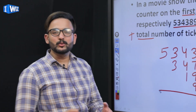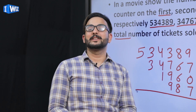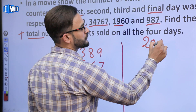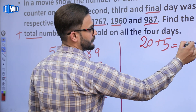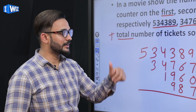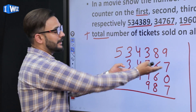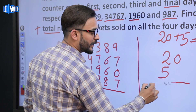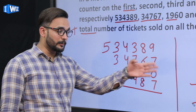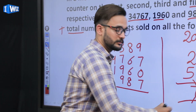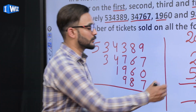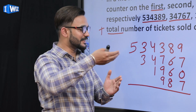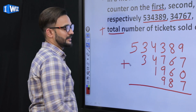You might wonder why we must write ones under ones — here's a simple example: 20 + 5. If you randomly misalign and write 5 under the tens place, you get 2 and 5 adding to 7 in tens place making 70, which is wrong. 20 + 5 should be 25. That's why place value alignment in column method is essential.